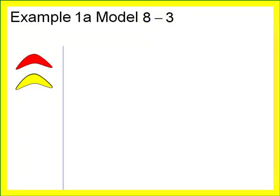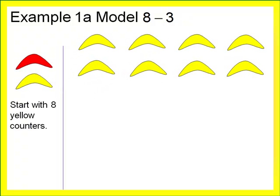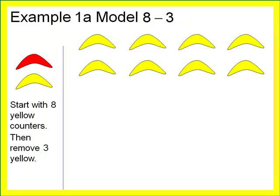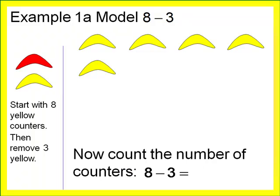Example one: model eight minus three using the bean counters. We start with eight yellow counters to represent positive eight. Subtraction means to take away, so we take away three yellow counters from the workspace. What remains is the answer to eight minus three, which equals positive five.